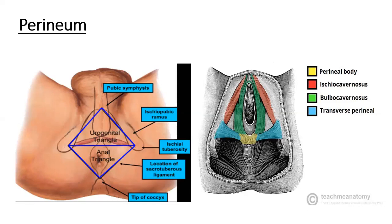I hope you remember the boundaries for the pelvic outlet. This is the inferior part, also located in the perineum. The perineum is separated from the pelvic cavity superiorly by the pelvic floor. So, inferior to the pelvic floor is the region of the perineum, or the perineal compartment.